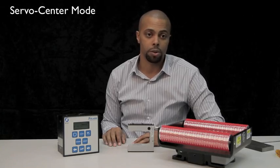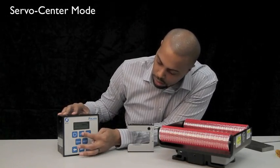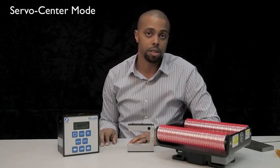To put the system in servo center mode, press the servo center button on the Polaris labeled B. Now the system is at machine line center.